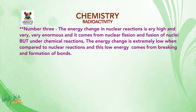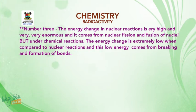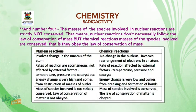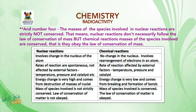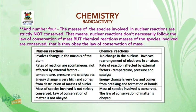Number three: the energy change in nuclear reactions is very high and enormous, coming from nuclear fission and fusion of nuclei. But under chemical reactions, the energy change is extremely low when compared to nuclear reactions, and this low energy comes from breaking and formation of bonds. Number four: the masses of species involved in nuclear reactions are strictly not conserved — they don't follow the law of conservation of mass. But in chemical reactions, the masses are conserved — they obey the law of conservation of mass.